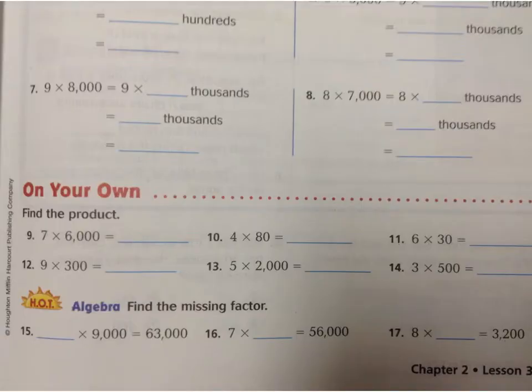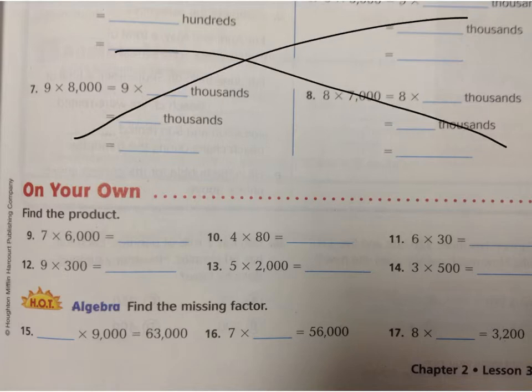We're going to skip down and look at number 9. I didn't really like the way that the book organized this part, so we didn't really do it in class. Number 9 says 7 times 6,000.